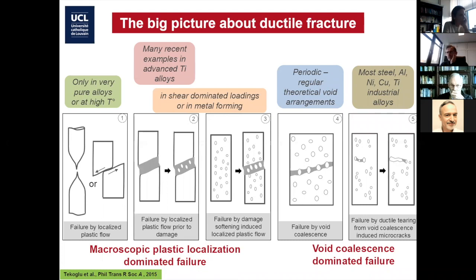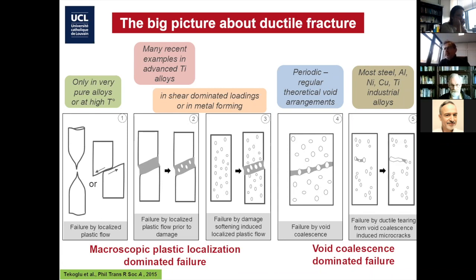This is a schematic we proposed six, seven years ago, and I keep reusing it to cover what are the different classes of ductile fracture phenomena. From the extreme left, you see very pure metals that would basically undergo failure just by accumulation of plasticity, almost to infinite deformation. There is no damage mechanism, so you get localization — necking or shear banding — and just extremely large deformation up to a point. The extreme right is a process where the entire failure is dominated by cavities that nucleate and grow, and the microstructure is complicated.